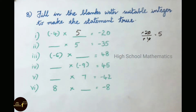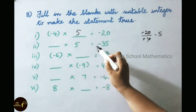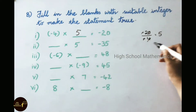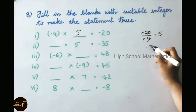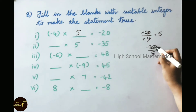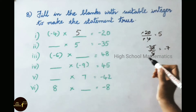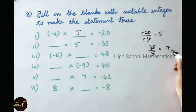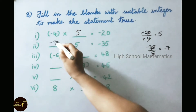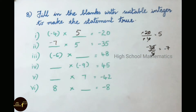Second one: blank into 5 equals minus 35. Let us divide minus 35 by 5. Five times table: 35 is 7 times. Here the minus sign is there, so write down minus 7. Therefore, minus 7 into 5 equals minus 35.